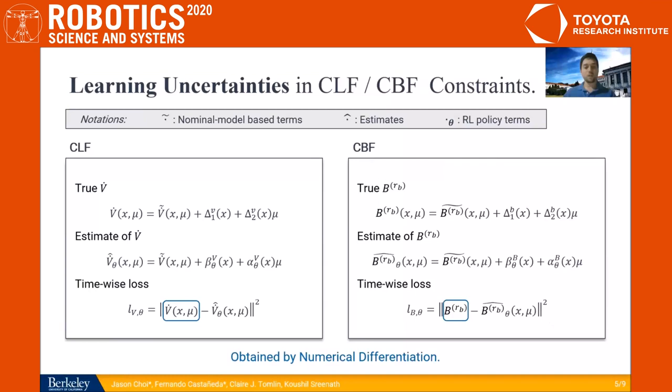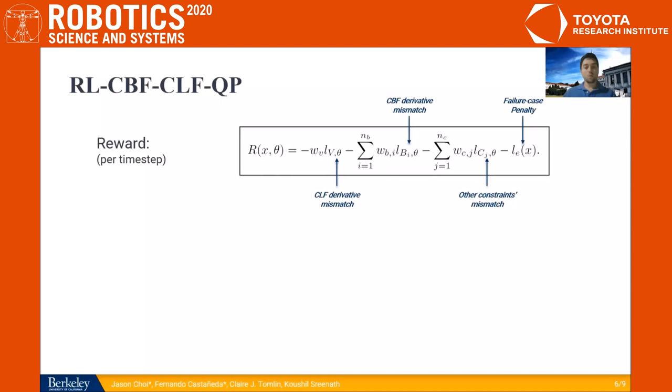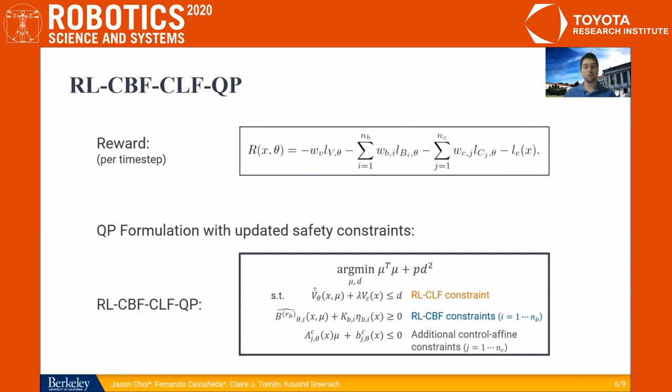The values of V dot and B^Rb in the loss functions are obtained through numerical differentiation. We can then do a weighted sum of those loss functions and use it as a reward function for our reinforcement learning problem. We add a failure case penalty to make the training more stable. After learning the mentioned estimates, we can solve online the modified min-norm quadratic problem that solves for the input-output linearization control input mu.